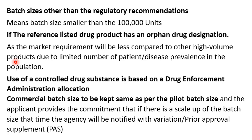Justifications for smaller batch sizes include: first, if the reference listed drug product has an orphan drug designation, since orphan drugs have limited patient populations and lower market requirements due to disease prevalence, justifying a smaller batch. Second, if the drug substance is a controlled drug substance based on the Drug Enforcement Administration allocation, smaller batch sizes than the standard may be taken.